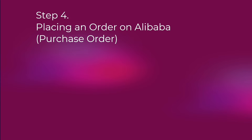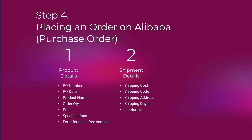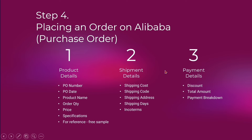That's okay as long as you document everything through the purchase order. The details I include in my purchase order are: product details, PO number, purchase order date, product name, order quantity, price, specifications, and a fee sample for reference. I also include shipment details: shipping cost, shipping code, shipping address, shipping days, and inco terms. Finally, the payment details cover discounts agreed upon, the total amount, and the payment breakdown.